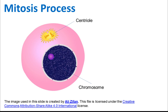Let's see how mitosis occurs — the mechanism of mitosis. Let's say we have a somatic cell. Somatic cells are the cells which are not reproductive cells. Inside this cell, we have a nucleus, and we also have structures called the centrioles. Centrioles play a very important role in mitosis, so make sure you remember this name.